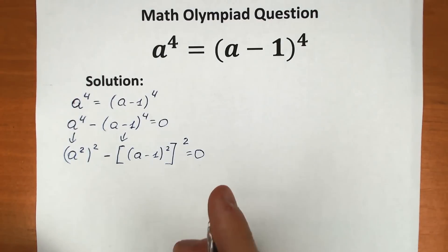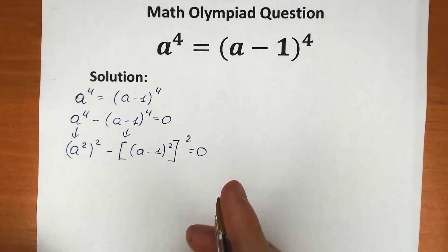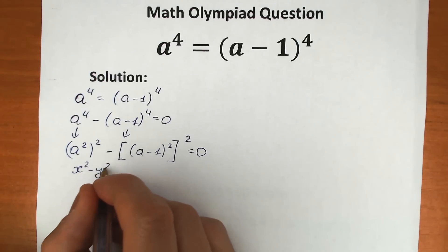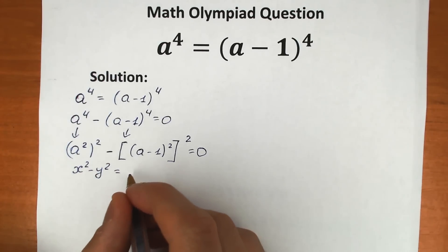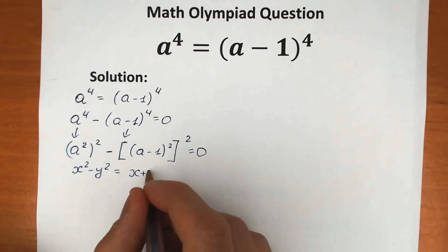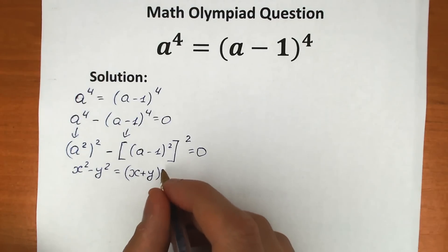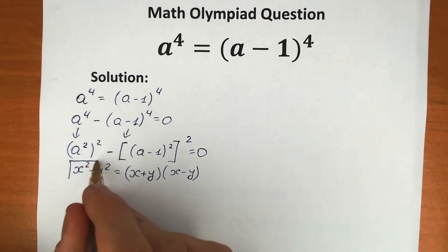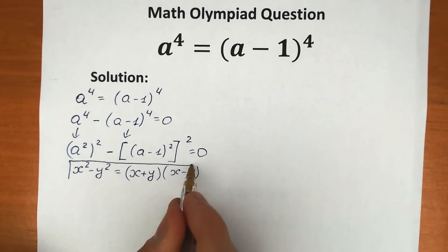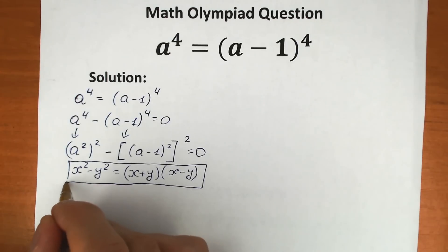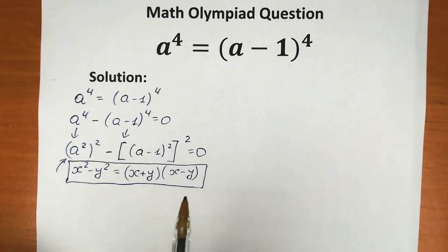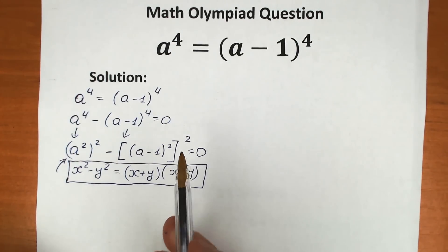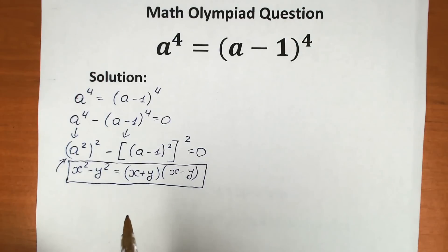Of course, we use the difference of squares — the well-known formula. We have x squared minus y squared, which we can write as (x plus y)(x minus y). Let's apply this formula right here, because we have exactly the same structure: a first value squared and a second expression squared.